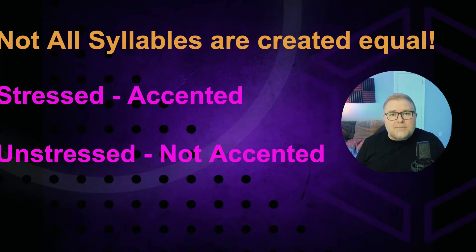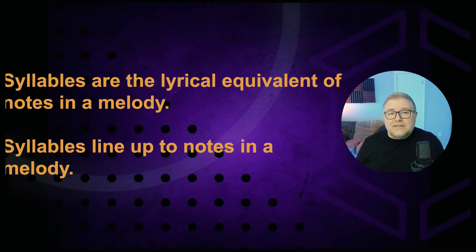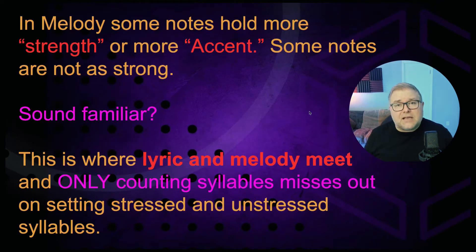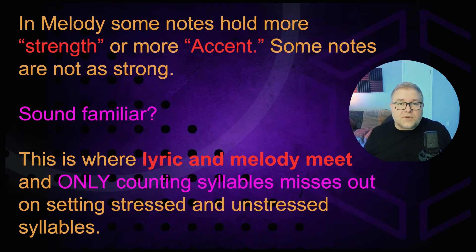Syllables are really the lyrical equivalent of notes within a melody — they line up to notes in your melodies. In melody, some notes hold more strength or accent, and some notes are not as strong. It's the same with your lyrics: there are syllables that are not as strong, and then there are stronger syllables. This is where your lyric and melody meet.